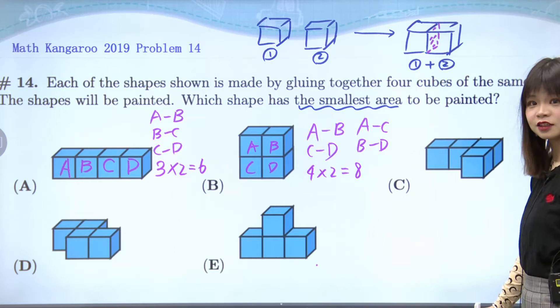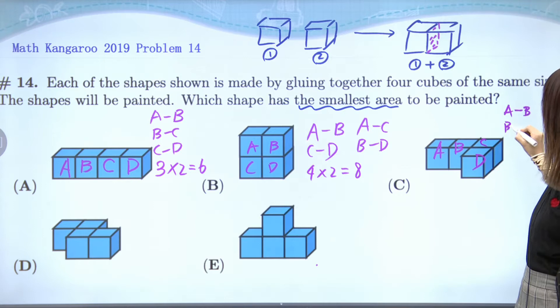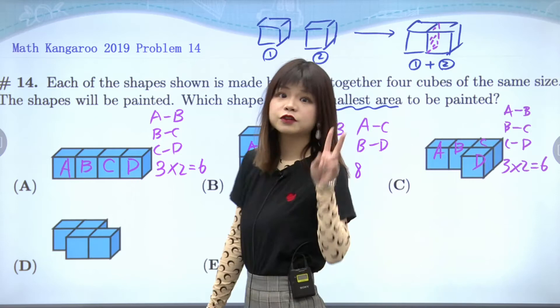How about the next one? Can you tell me the answer? Six! How did you get six? We have cubes A, B, C, D, and this time A and B are connecting, B and C are connecting, and C and D. So in total we have three times two equals six.